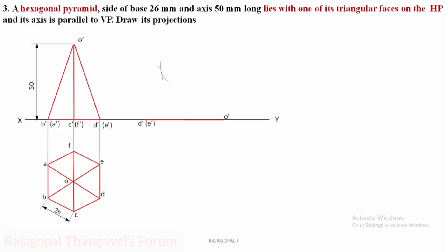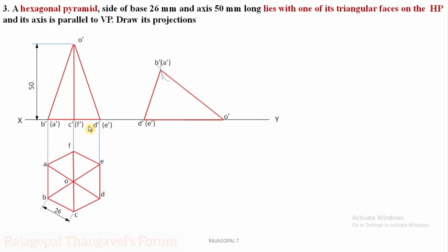After fixing this on XY, identify B dash and A dash. With O dash as center and D dash E dash as radius — that is what we did in the first step — then with O dash as center and B dash A dash as radius, draw one arc. Then with D dash E dash as center and B dash A dash as radius, draw another arc. Both arcs meet at one point, which gives B dash A dash. Join from D dash E dash to complete O dash B dash A dash. At the midpoint we have C dash and F dash. Step 3 is completed.